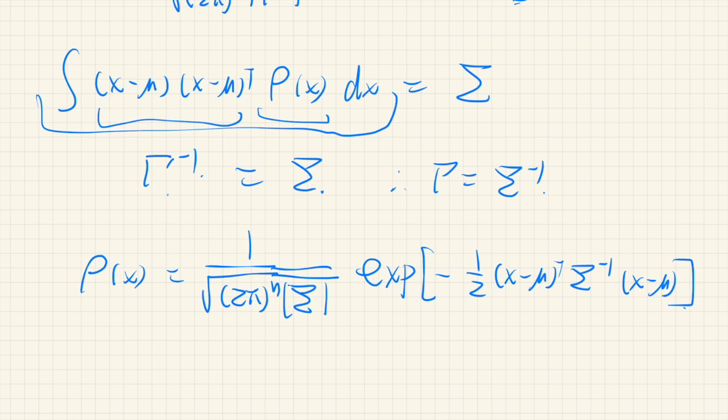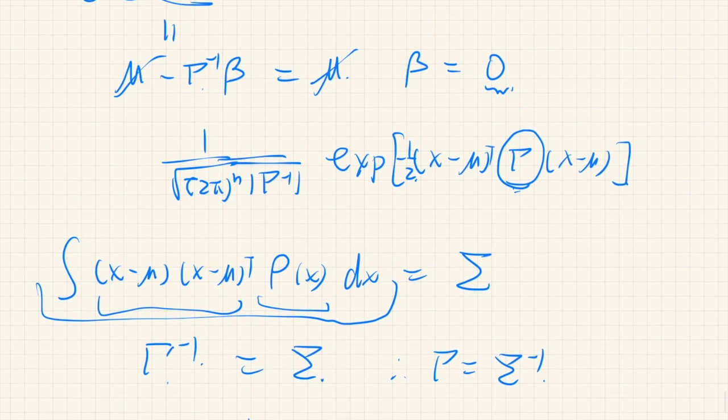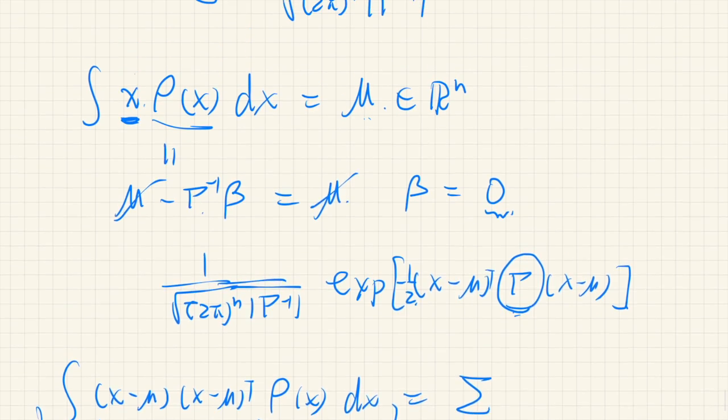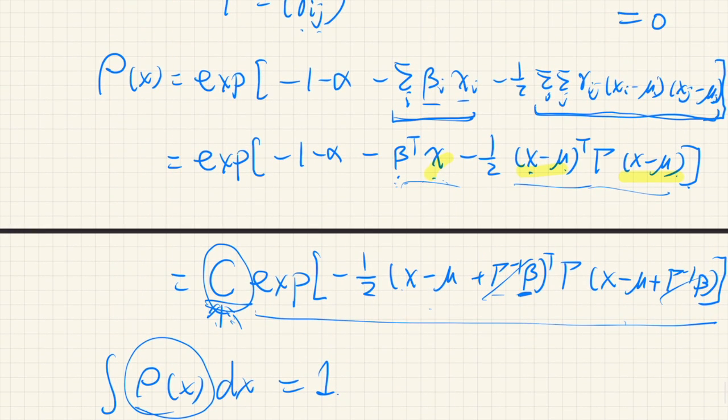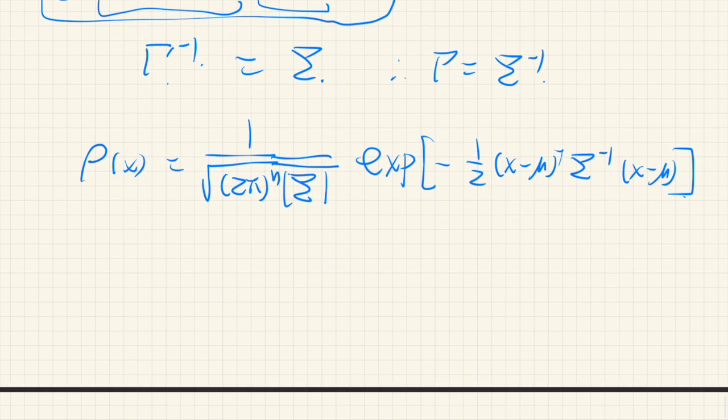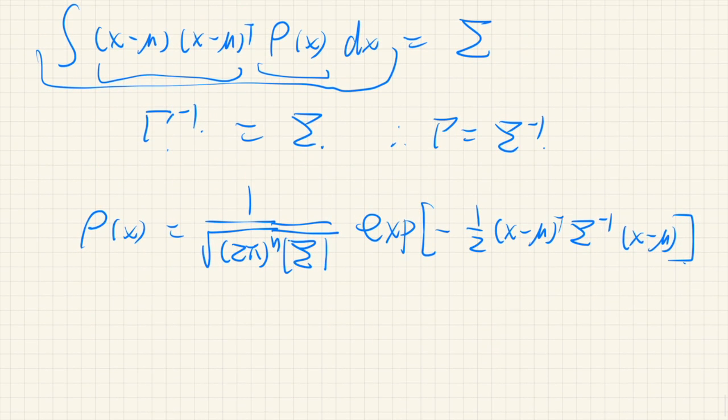So there's nothing too tricky about this. It's very similar to the univariate case, so it should be not too difficult. If anything, maybe this step, from here to here, completing the square for x may be a little bit complicated. But if you get used to it, it shouldn't be too much of a problem. Okay, that's it for this video. See you later.